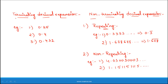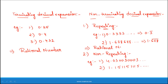So to summarize: a number which has a terminating decimal expansion is a rational number. A number which has a non-terminating repeating decimal expansion is also a rational number. But a number which has a non-terminating and non-repeating decimal expansion is an irrational number.